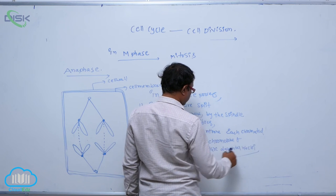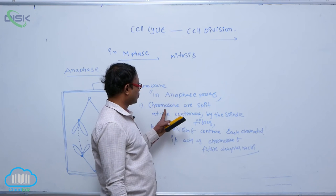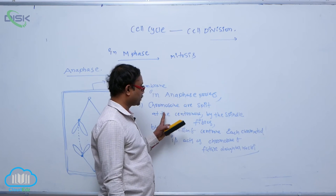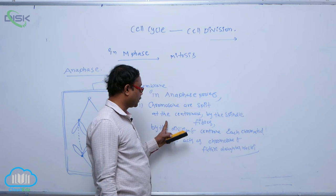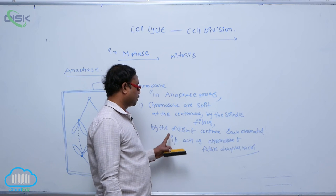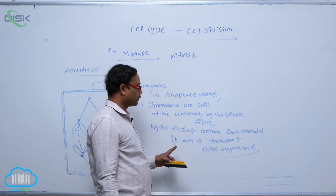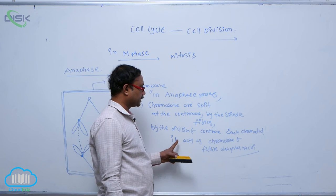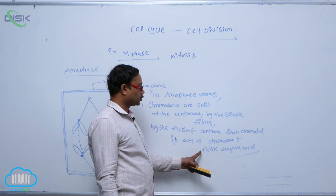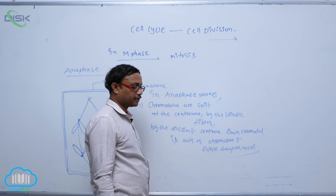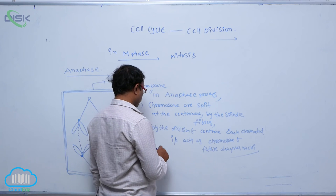In the anaphase process, chromosomes are split at the centromere. By the division of the centromere, each chromatid acts as the chromosome of the future daughter nuclei.